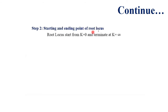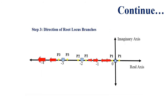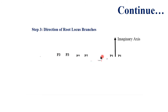Step 2 — starting and ending point of root locus: root locus starts from K equals to 0 and terminates at K equals to infinity. Root locus starting points correspond to the number of poles in the system, and it terminates according to the number of zeros.